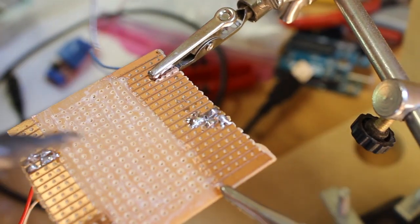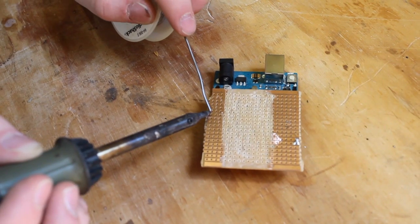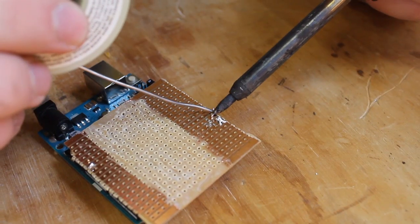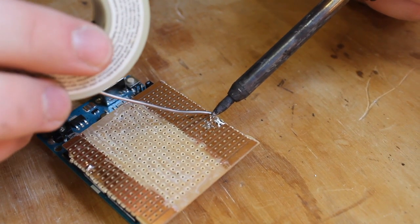Now we have to solder the connections onto the perfboard so the connections are stable. We remove the copper in the middle section to prevent the relay from making any connections and interfering with the circuit.